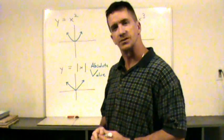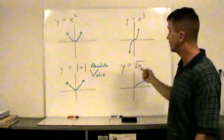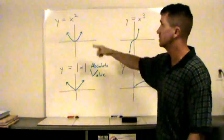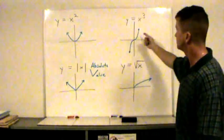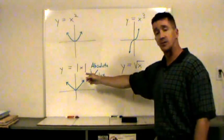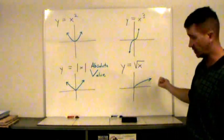In this video we're going to talk about transformation of functions. We have four common functions here: y equals x squared, the quadratic function; y equals x cubed, the cubic function; y equals the absolute value of x, the absolute value function; and y equals the square root of x, the square root function. I've drawn rough sketches of what these graphs look like. Notice that the absolute value function makes a V - value starts with V, that may help you remember that.